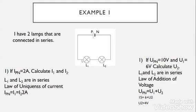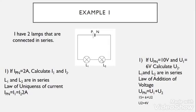Example one: I have two lamps connected in series with respect to the dry cell. If IPN, the current across the dry cell, equals 2 amperes, calculate I1 and I2. The current in series connection is the same, so since L1 and L2 are in series we apply the law of uniqueness of current: IPN equals I1 equals I2 equals 2 amperes.